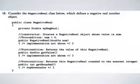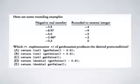So getRounded returns type integer, because originally the value is of type double, and after rounding it becomes an integer. Here are some rounding examples: when the negative real number is -3.4, it is rounded to the nearest integer -4. If it is -8.97, it is rounded to -9 — so it's rounded down. If the original negative real number is -5.0, it rounds directly to -5. If it is -2.487, it will be rounded to -2. If it's -0.4, it will be rounded to 0.